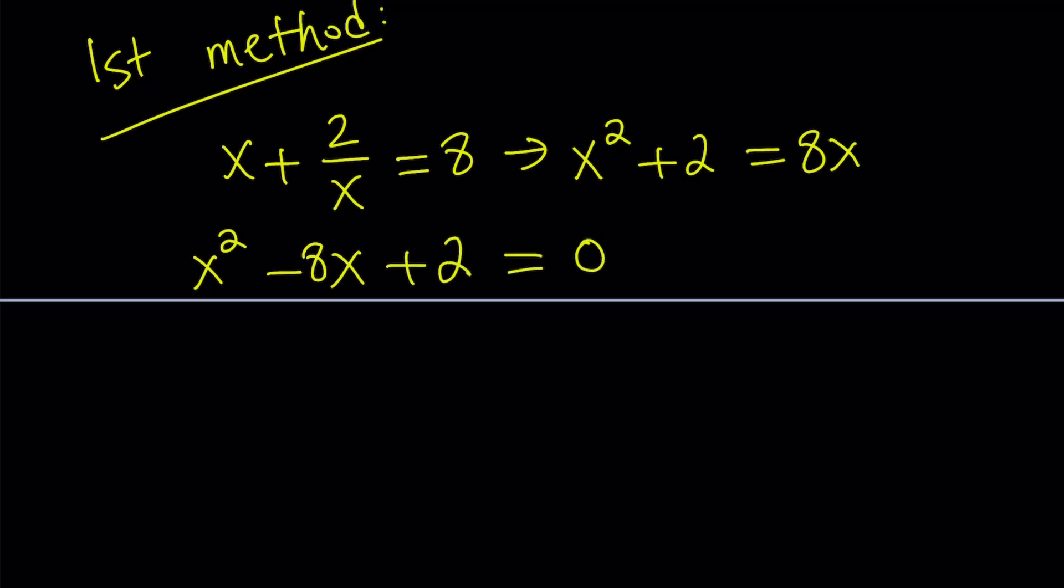And this turns into a quadratic. Obviously, x equals 0 does not work, so we don't have to worry about it. But we always have to check. So to solve this equation, there's a couple different ways. Obviously, it's not factorable. You can't find two integers whose product is 2 and whose sum is negative 8. But you can find radicals. So we're going to use either the quadratic formula or you can use completing the square.